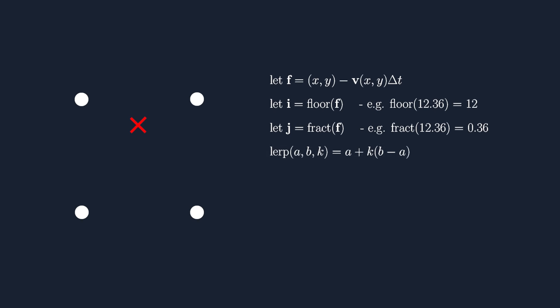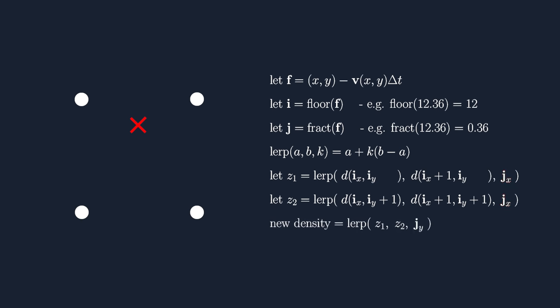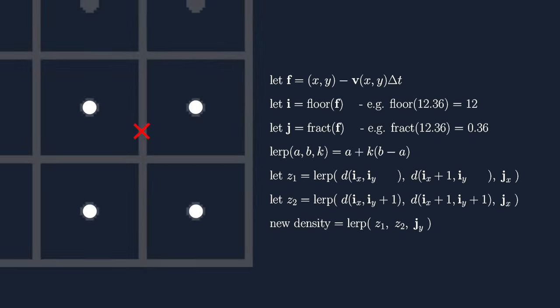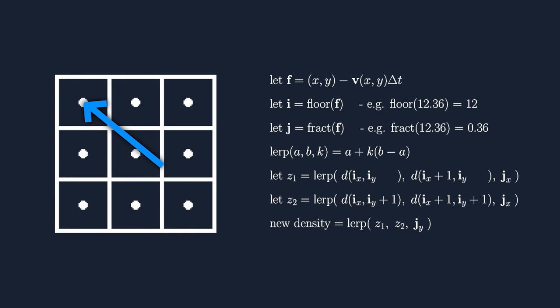Then, using a linear interpolate function which looks like this, we can interpolate between the four surrounding square centers' density values by first individually interpolating between the two upper values and two lower values using the fractional x-coordinate, then interpolating between those two results using the fractional y-coordinate. And that will give the new density value for the square in question.